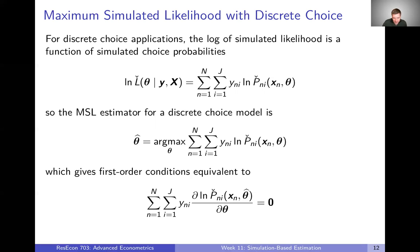If we take the first-order condition here, we find that the derivative of the log of the simulated choice probability for the alternative that is actually chosen, with respect to every parameter, equals zero. We talked about these first-order conditions a few weeks ago when we discussed maximum likelihood, but here we're plugging in the simulated choice probabilities to show exactly what these first-order conditions are. When thinking about a discrete choice model where we've had to simulate choice probabilities like a mixed logit model, this expression is ultimately what tells us what our estimator is — very similar to maximum likelihood, just with simulated choice probabilities instead of actually calculated ones.